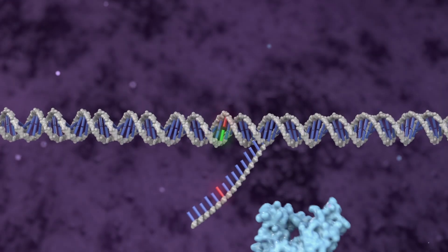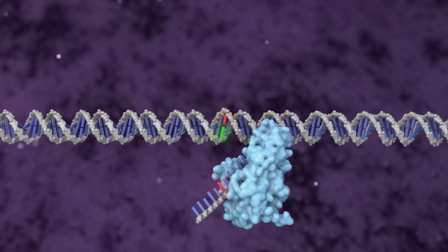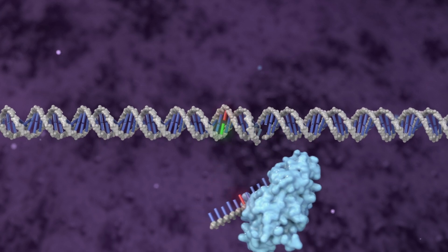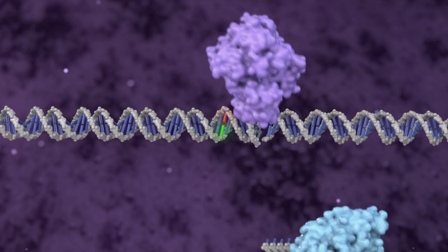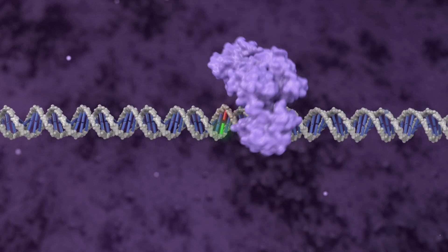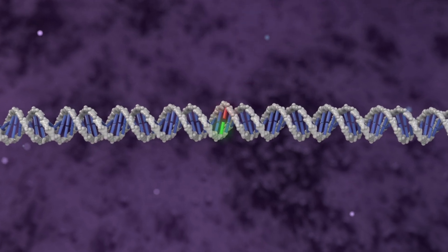DNA repair enzymes remove the first mutated strand and stitch the strand back together. This leaves one strand corrected and one still containing the mutation.